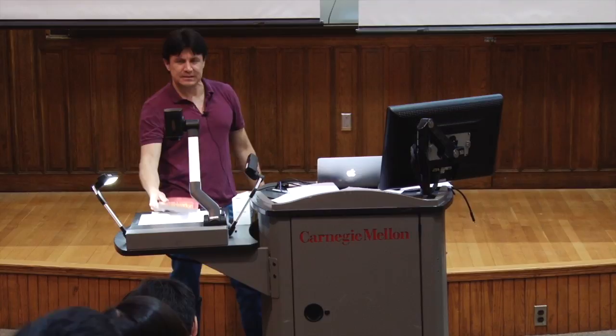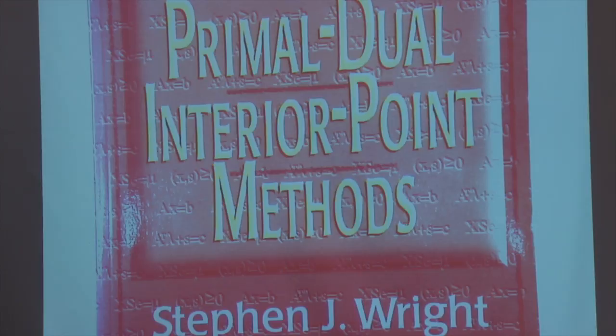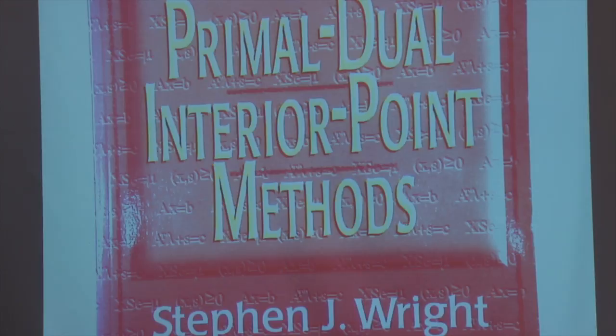With that, I'm going to close this chapter today. On Wednesday, I will tell you about how we can take very similar ideas to semi-definite programming — the same idea: proximity to the central path, Newton step, and a primal dual scheme. If you're interested in references, a lot of what I discussed here is based on a very fine reference for primal dual methods for linear programming. I'll see you on Wednesday.